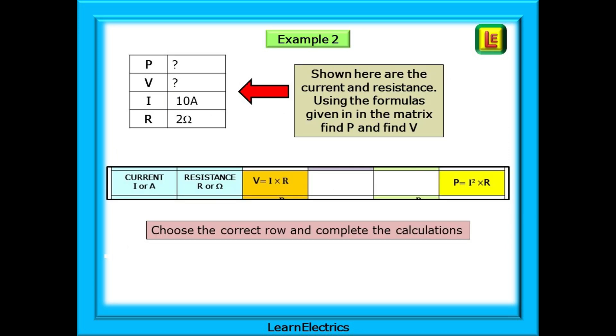Example two gives us the current I and the resistance R. We must find the power and voltage. The first thing to do is to find the correct row in the matrix. Our two known values are current and resistance. Pause the video and find the answer.